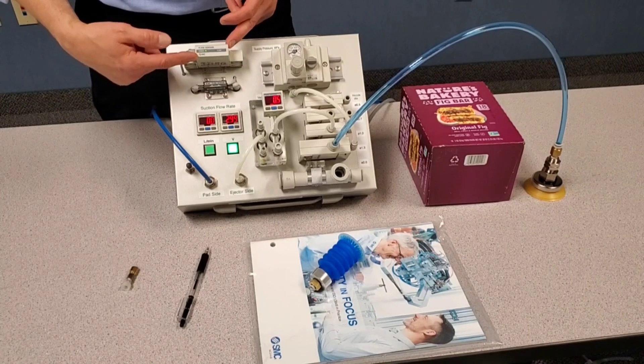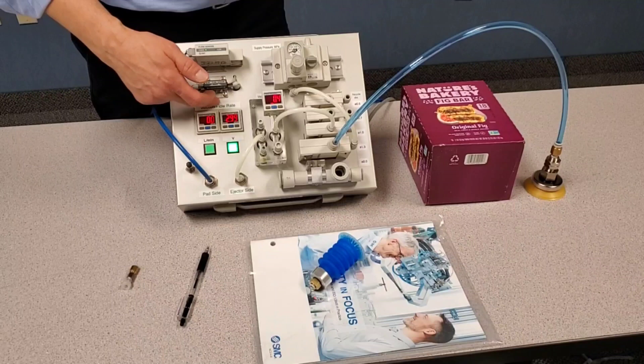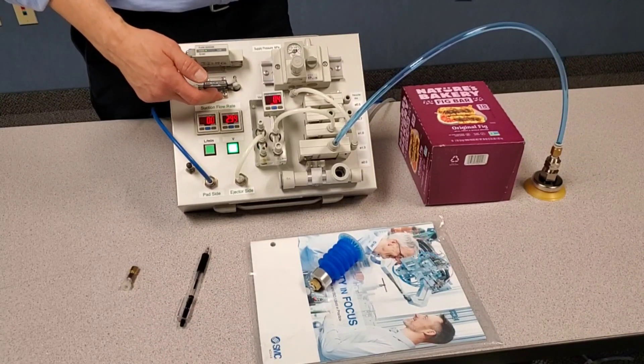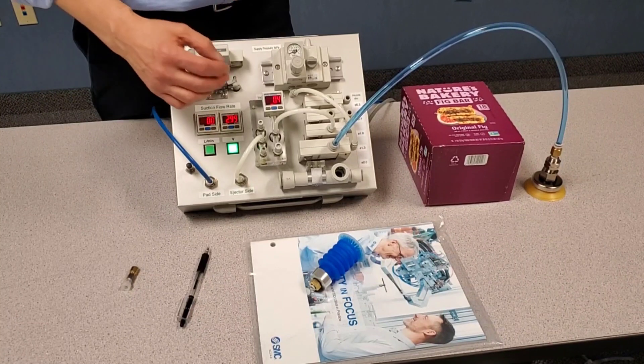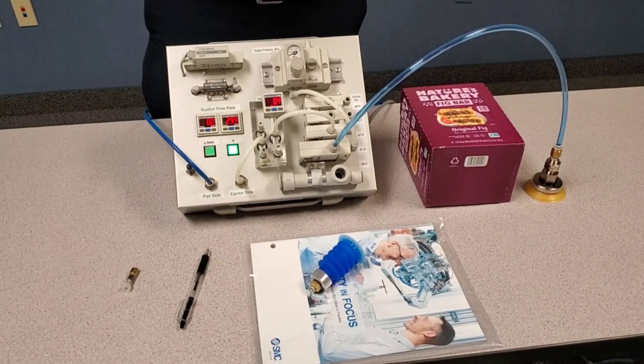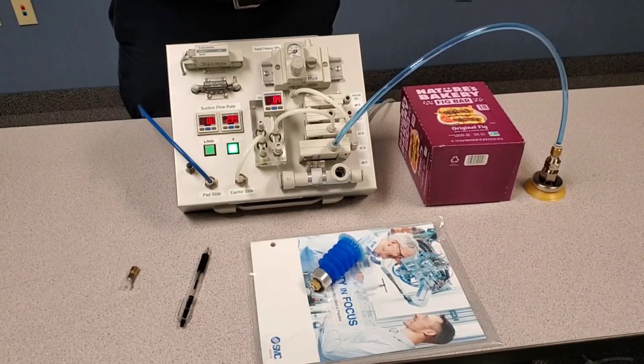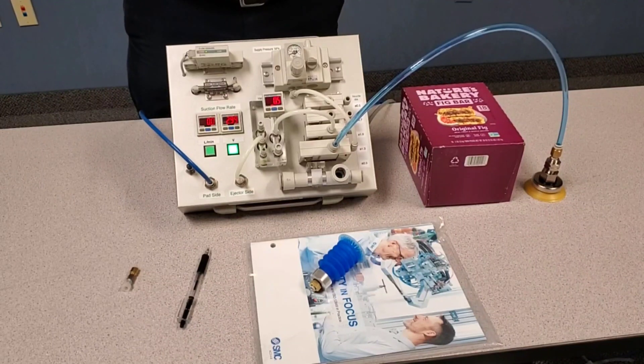When you're dealing with a very small workpiece, it would be beneficial to consider measuring flow for your alarm point versus pressure, because the difference can sometimes be very small when you're dealing with a part in the neighborhood of two to four, maybe six millimeters in terms of your vacuum cup.